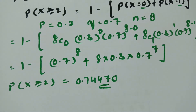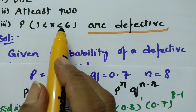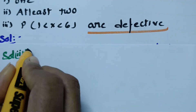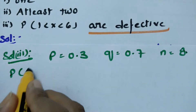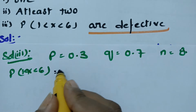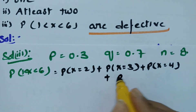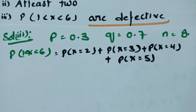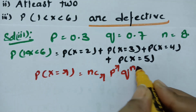Solution 3: P(1 < X < 6), meaning x takes values 2, 3, 4, and 5. So we calculate P(X = 2) + P(X = 3) + P(X = 4) + P(X = 5). The binomial formula P(X = r) = nCr · P^r · Q^(n−r) is applied for each of these four values.